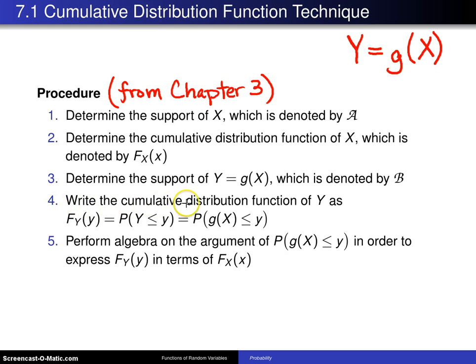Write the cumulative distribution function of y as F sub y of y is the probability that y is less than or equal to y. This first part is from the definition of a cumulative distribution function. The nice thing about the CDF technique is it always starts out in this same fashion right here.